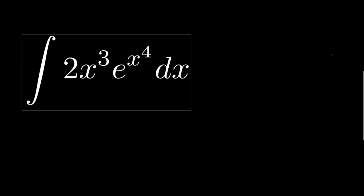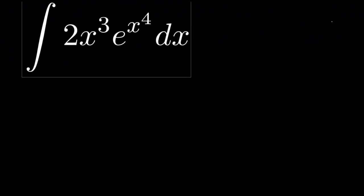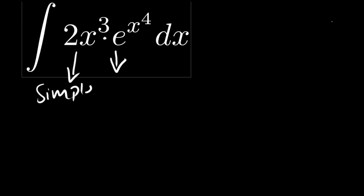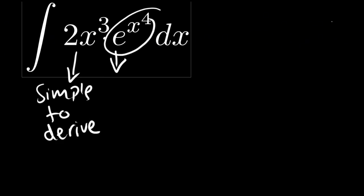Now let us go to level 300. Here we have two functions multiplied together. Which one do we take and which do we leave? We look for the simpler one to derive. In this case, e to the power x to the power four is simpler to differentiate, so we take that one.